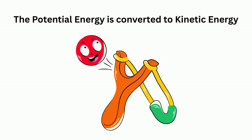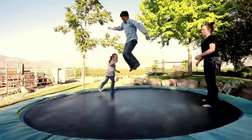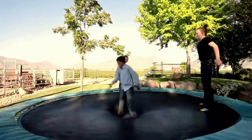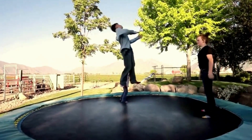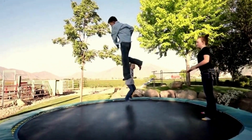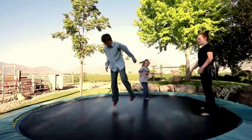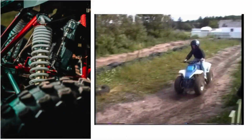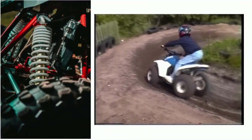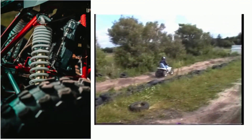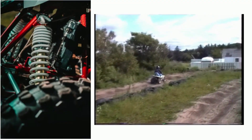Elastic energy shows up in lots of places. When you jump on a trampoline and your body compresses the springs, then you are launched back up. Off-road vehicles use springs in their shock absorbers to absorb and release energy.